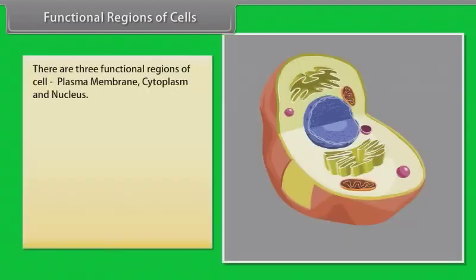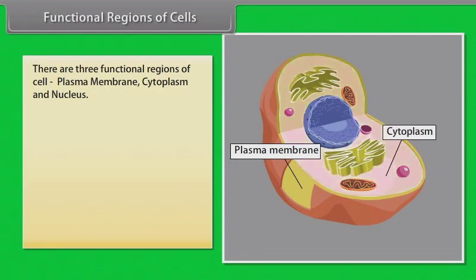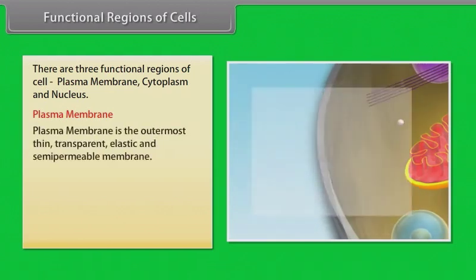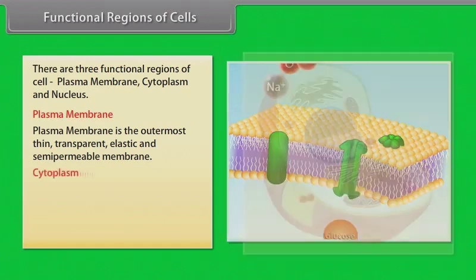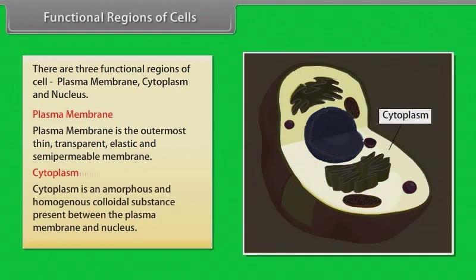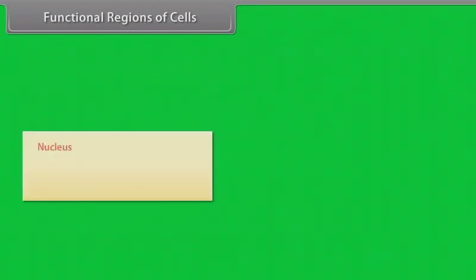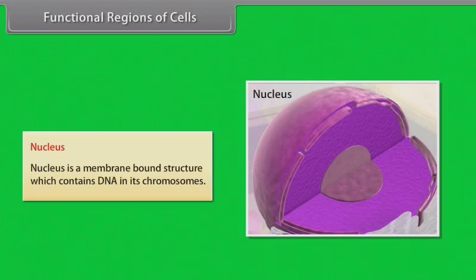There are three functional regions of a cell: plasma membrane, cytoplasm and nucleus. The plasma membrane is the outermost thin, transparent, elastic and semi-permeable membrane. Cytoplasm is an amorphous and homogeneous colloidal substance present between the plasma membrane and the nucleus. The nucleus is a membrane-bound structure which contains DNA in its chromosomes.